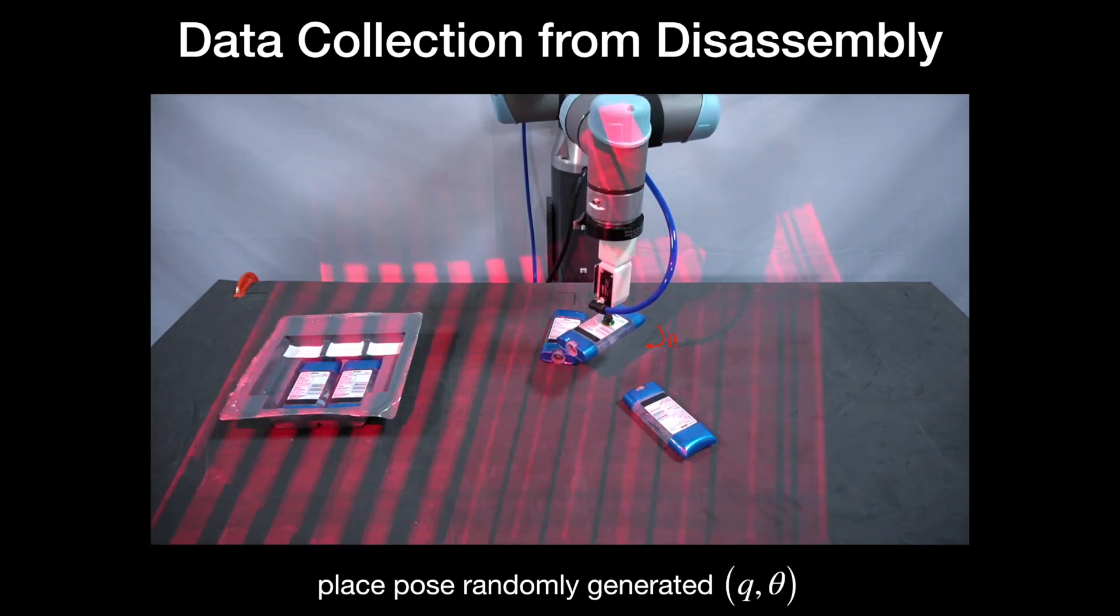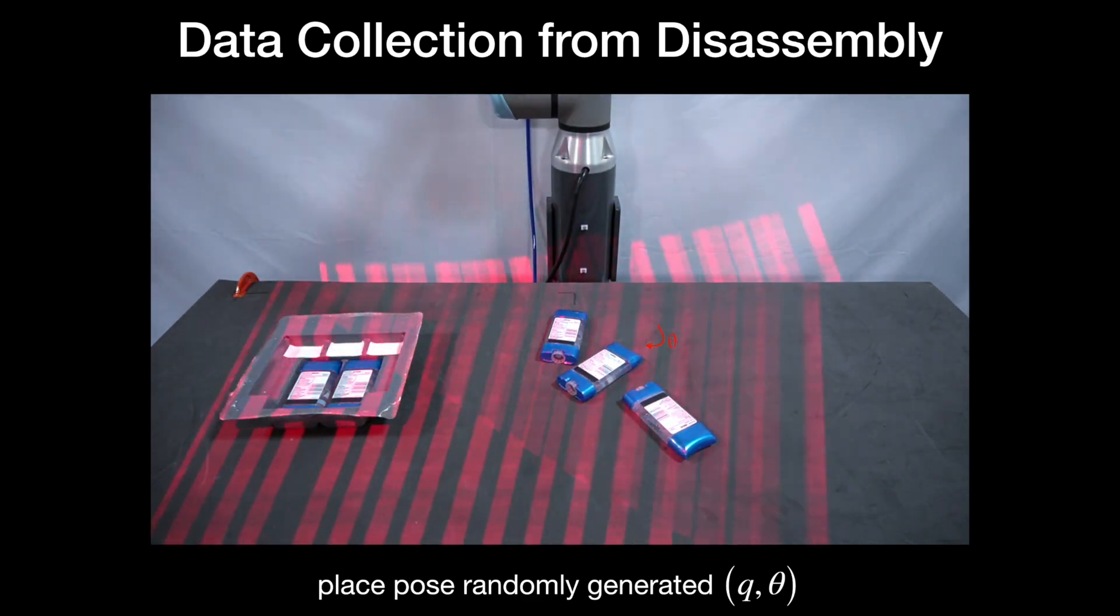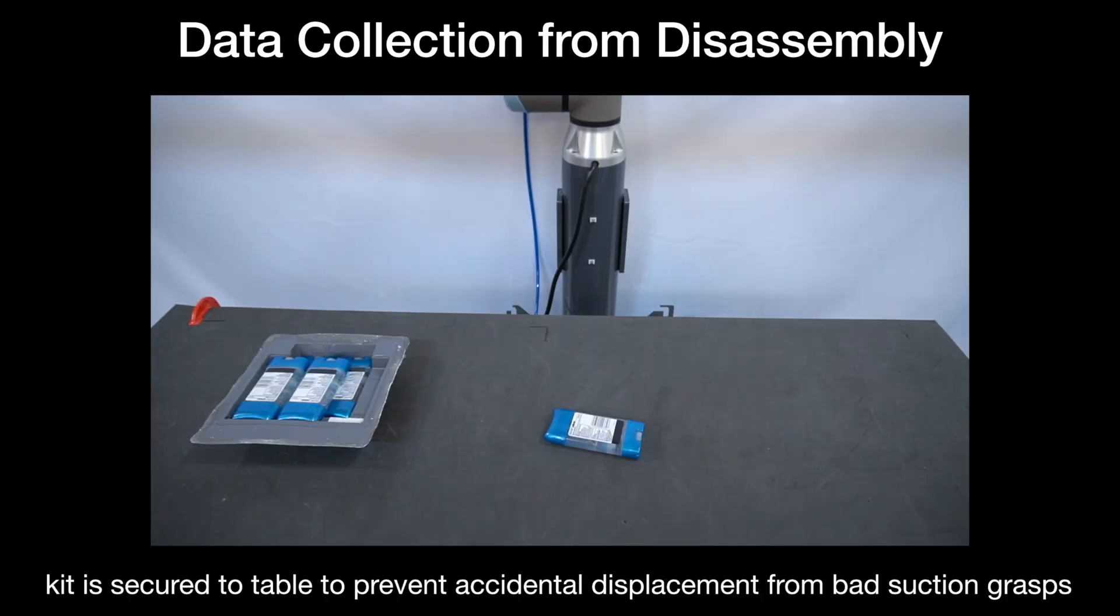Otherwise, it tries the next best suction location. The suction network is trained through trial and error and the kit is taped to the table to ease the learning and prevent accidental displacements.